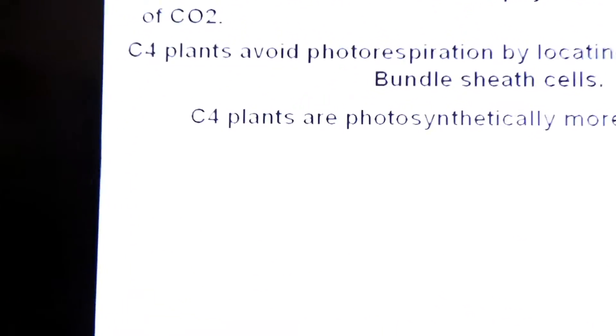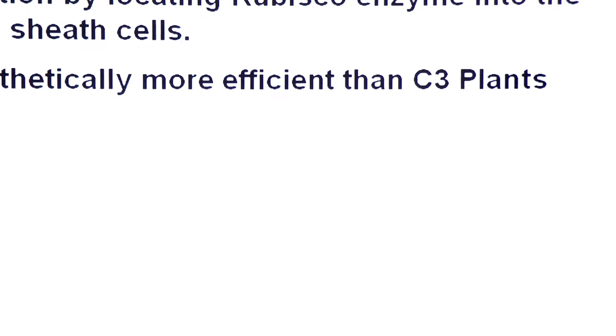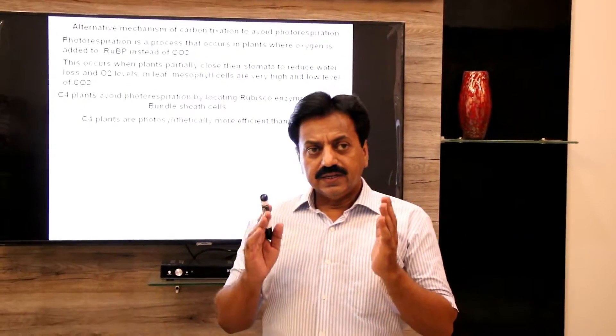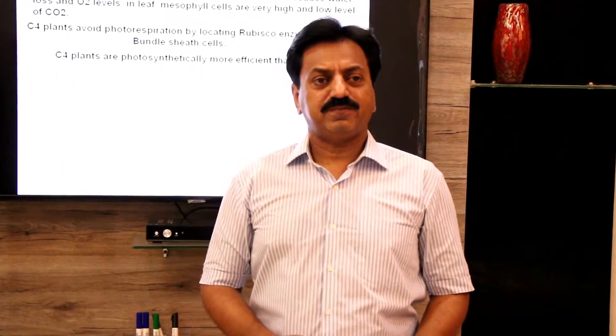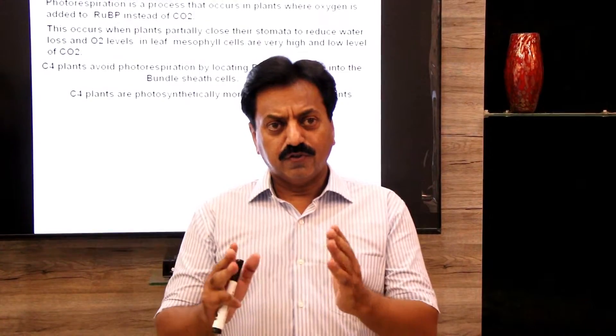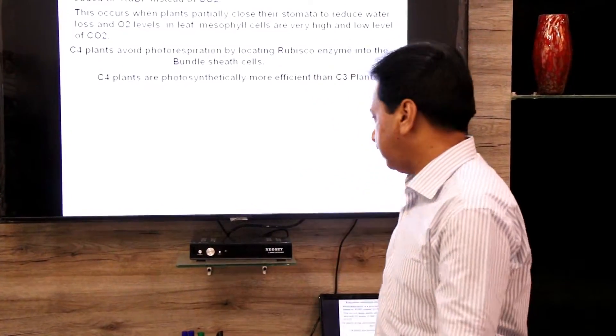C4 plants are photosynthetically more efficient than C3 plants. C4 plants are champions of photosynthesis because they avoid photorespiration through an alternative mode — C4 fixation — which is what we are studying today.